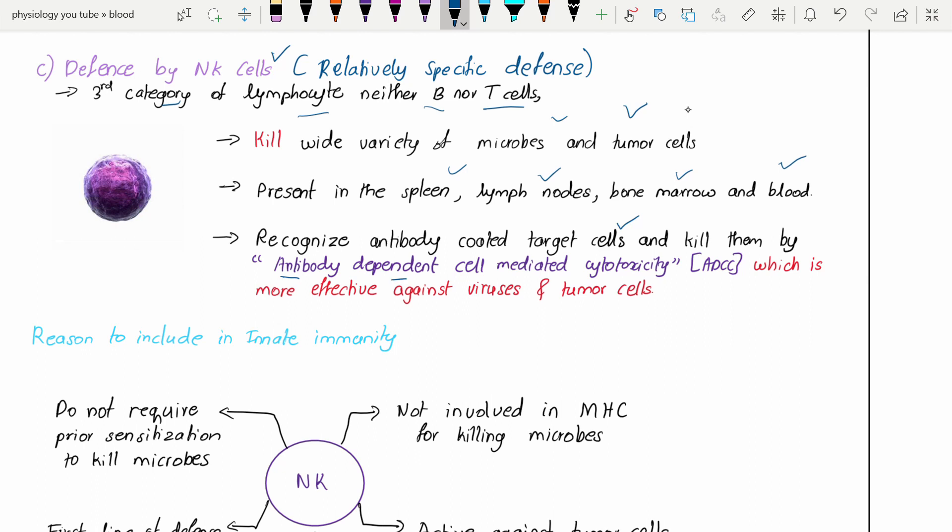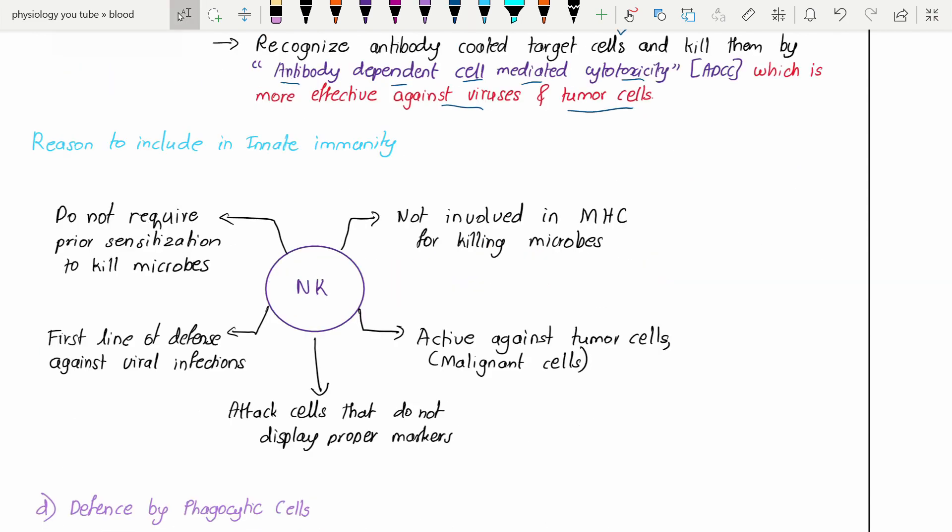These recognize antibody-coated target cells and kill them by ADCC - antibody-dependent cell-mediated cytotoxicity, which is more effective against viruses and tumor cells. So why do we include natural killer cells under innate immunity? First of all, they do not require prior sensitization to kill microbes, so they can kill naturally without any prior sensitization.